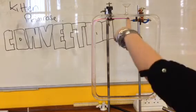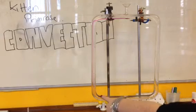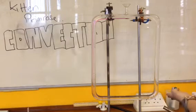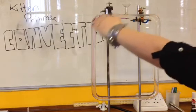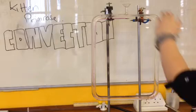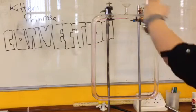Now you can see that the purple color has started to move down this side. This is because as the water is getting less dense and it's moving up, it's causing a convection current as it's moving around this way.